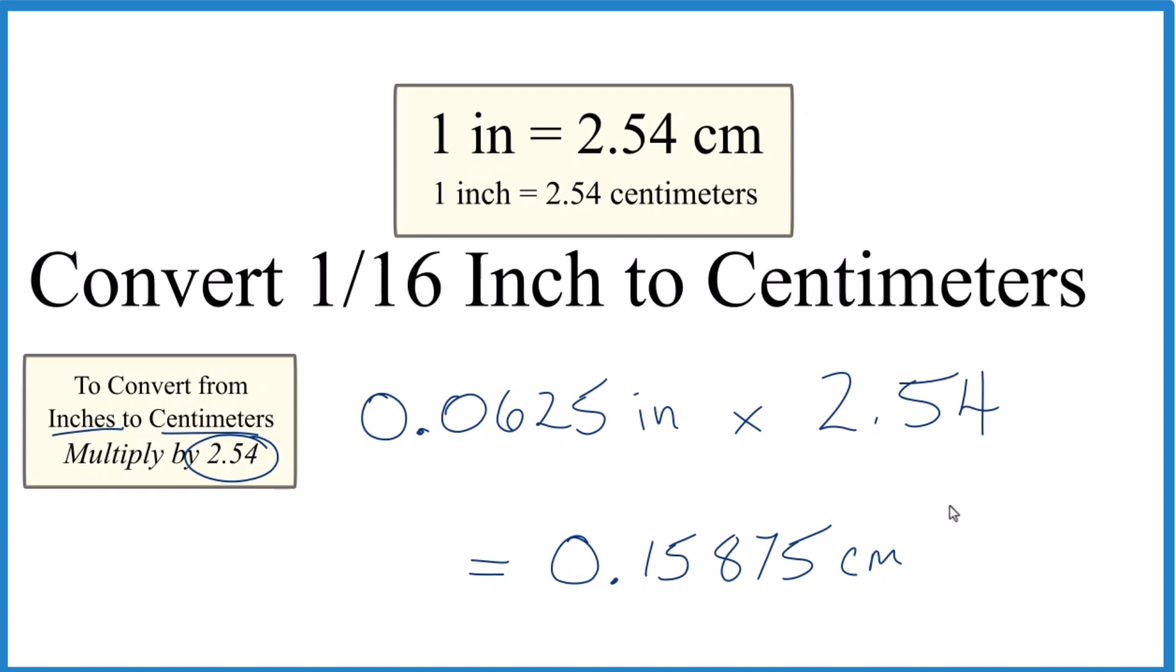If you're interested in the units, note that it's 2.54 centimeters per inch. So we can put centimeters per inch here. And then when we multiply it, inches on the top and on the bottom, they cancel out. That gives us the centimeters.